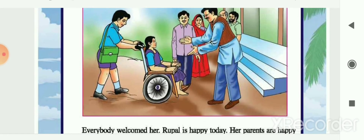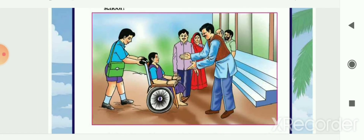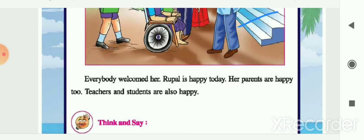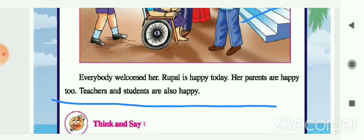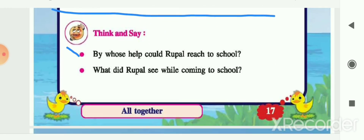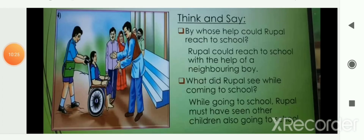In the next picture, Rupal has finally reached the school. Everyone is happy — her parents are happy, her teachers are happy, and students welcome her. Think and say: by whose help could Rupal reach school? Rupal could reach school with the help of a neighboring boy. What did Rupal see while coming to school? She must have seen other children also going to school, the scenery around the school, and everything around her on that day.